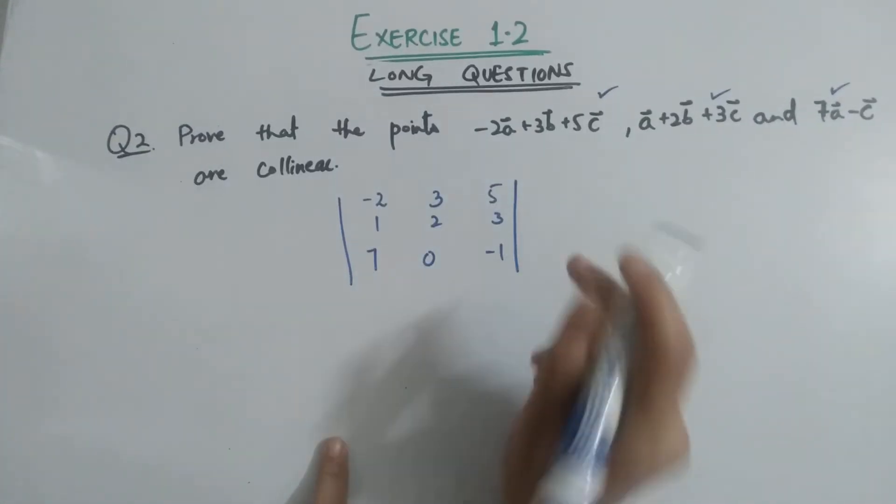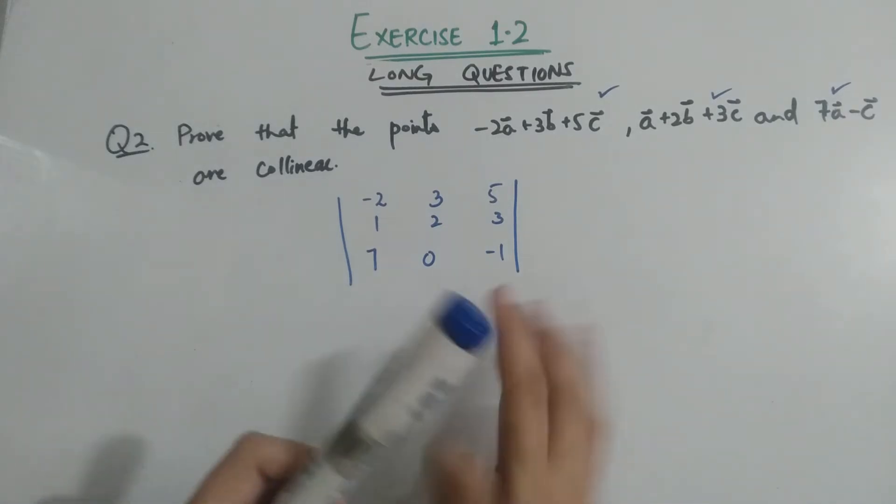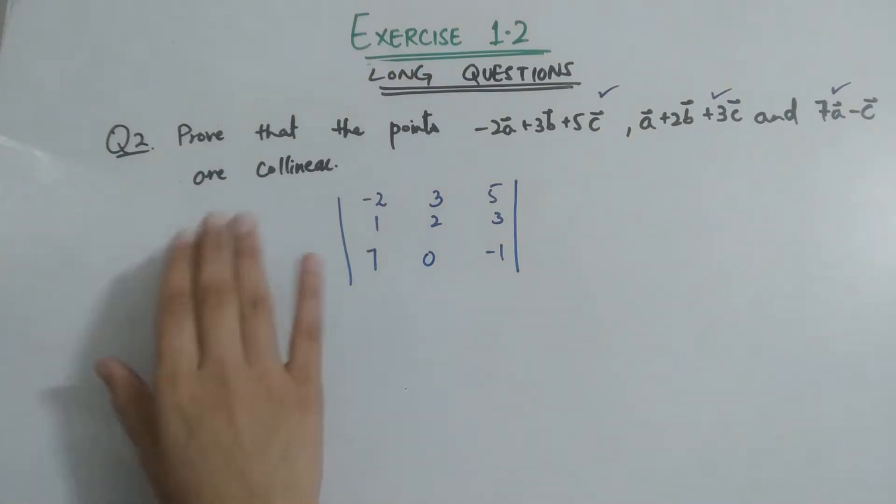This should be equal to zero. If it is zero, it means that the vectors are collinear.